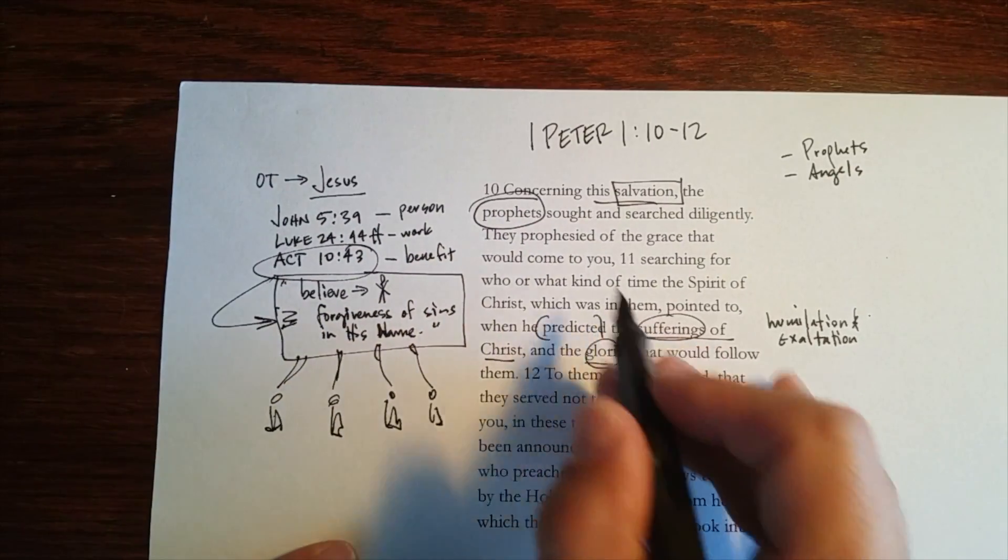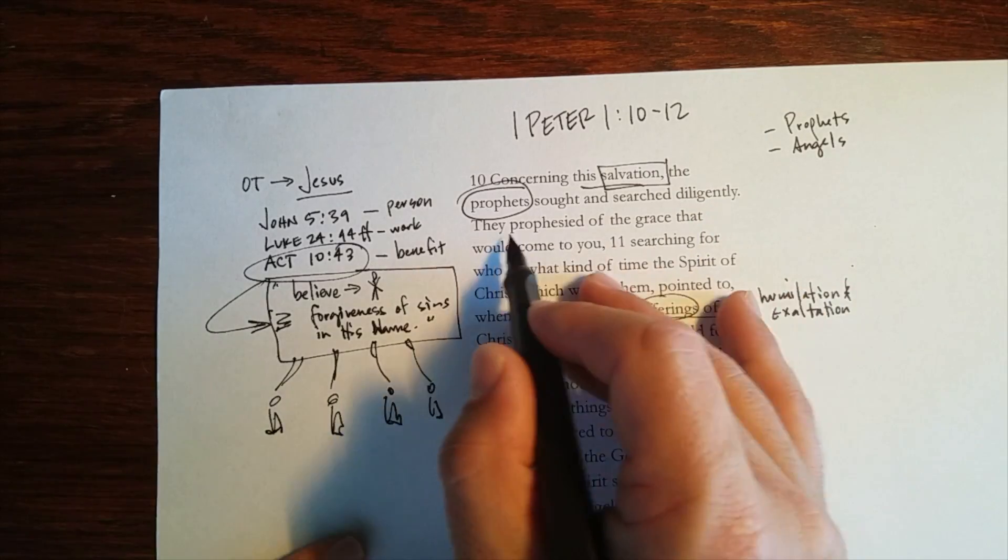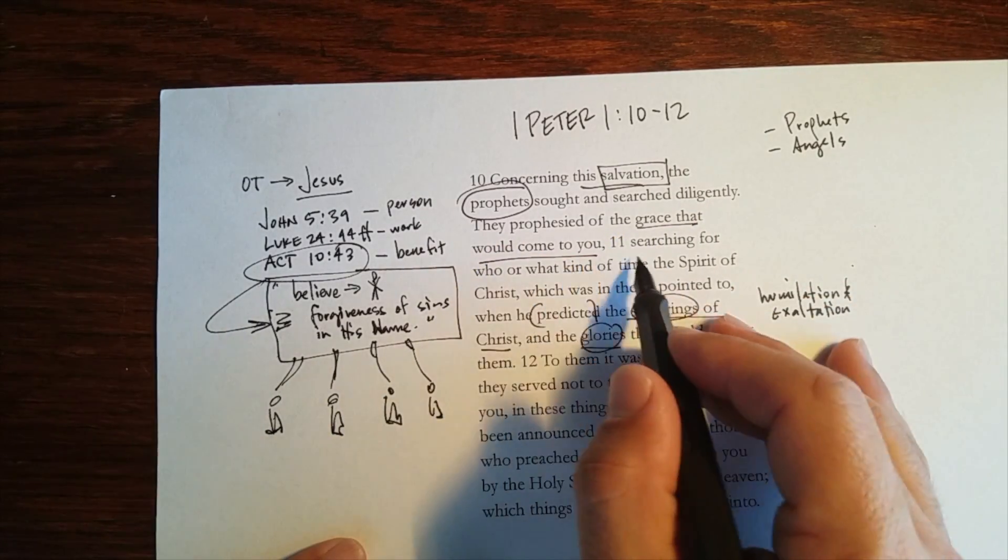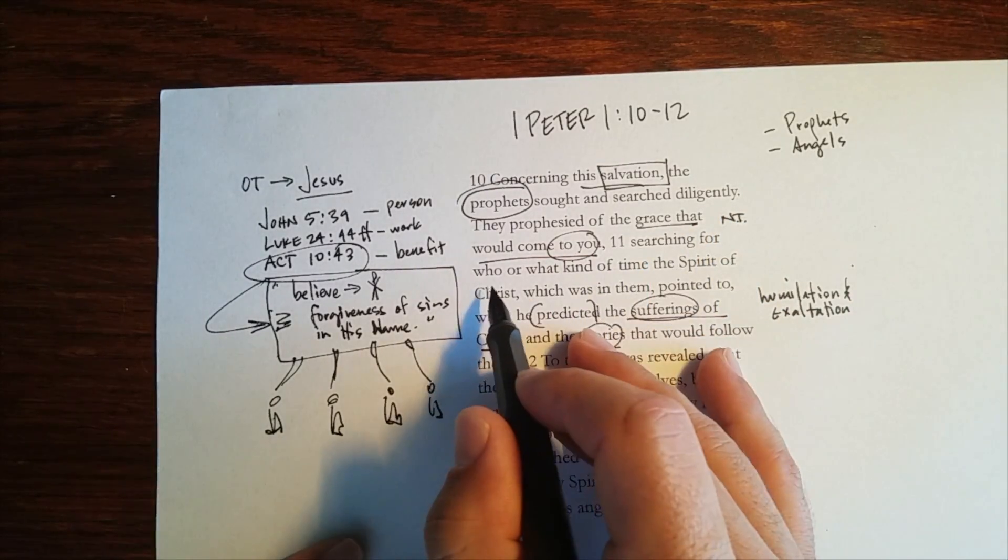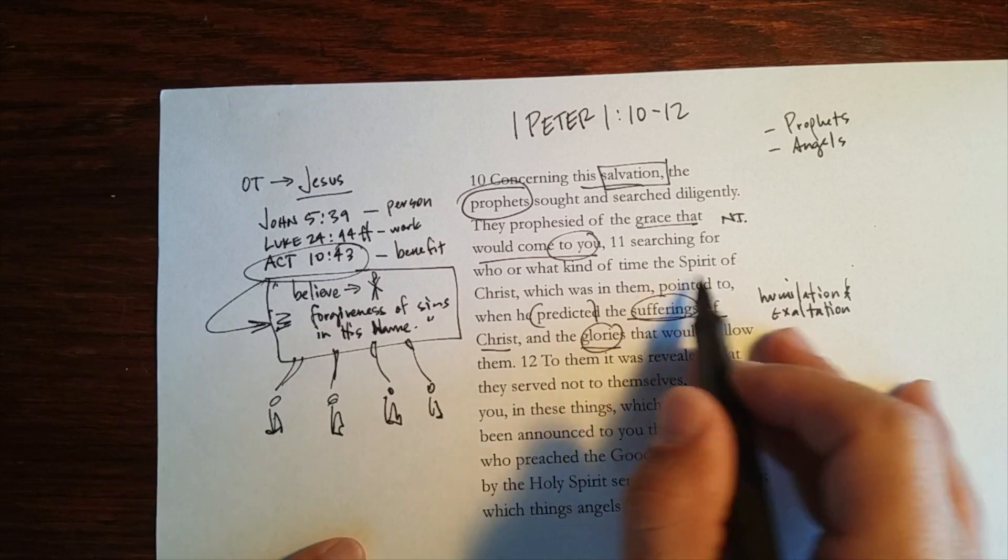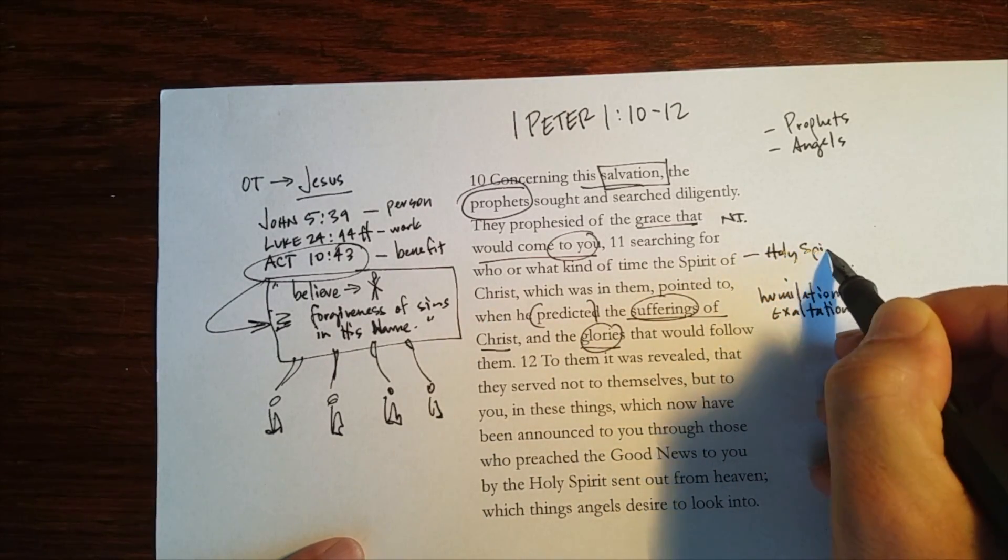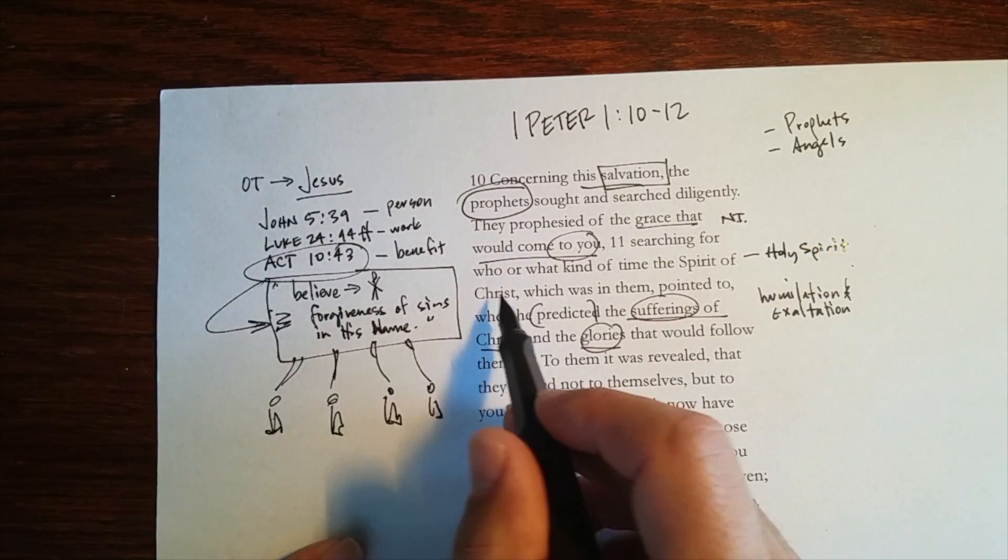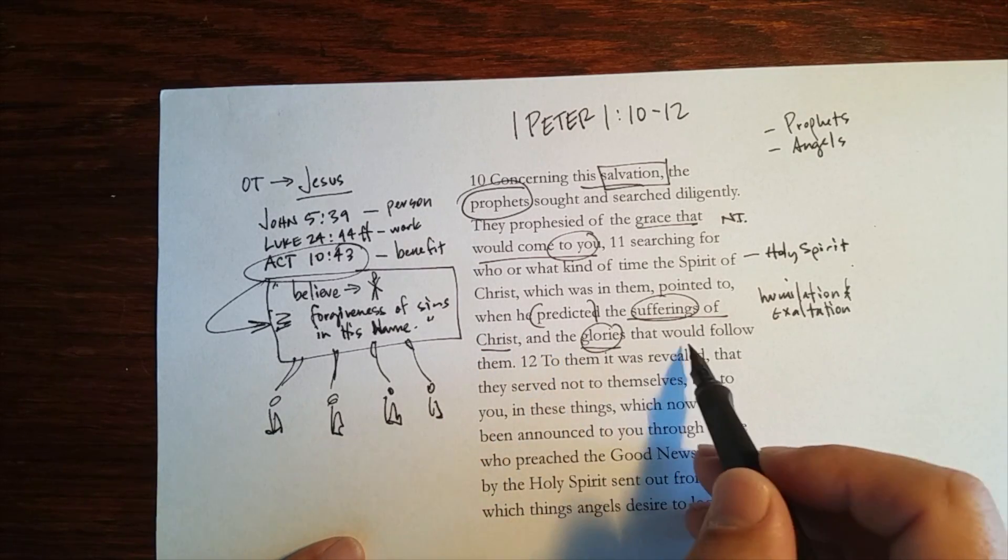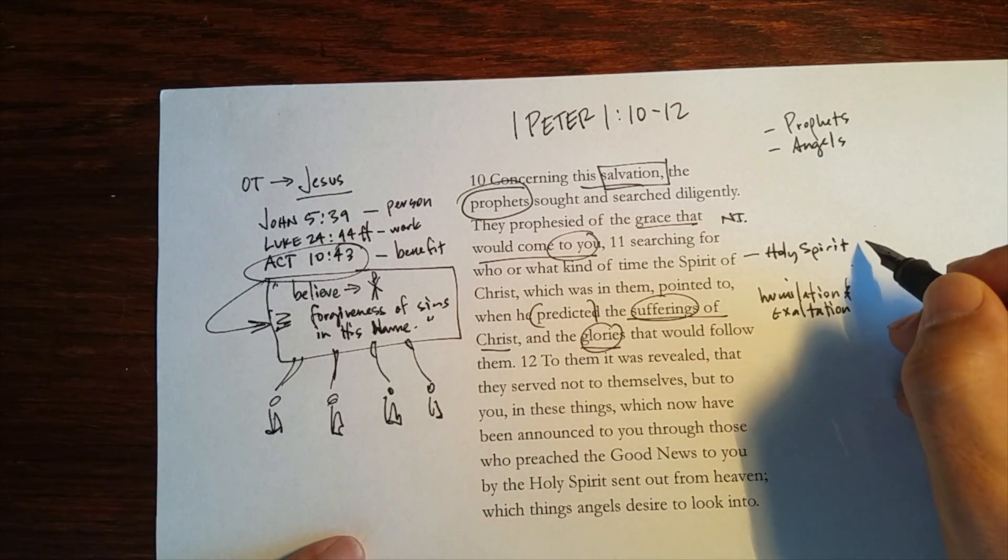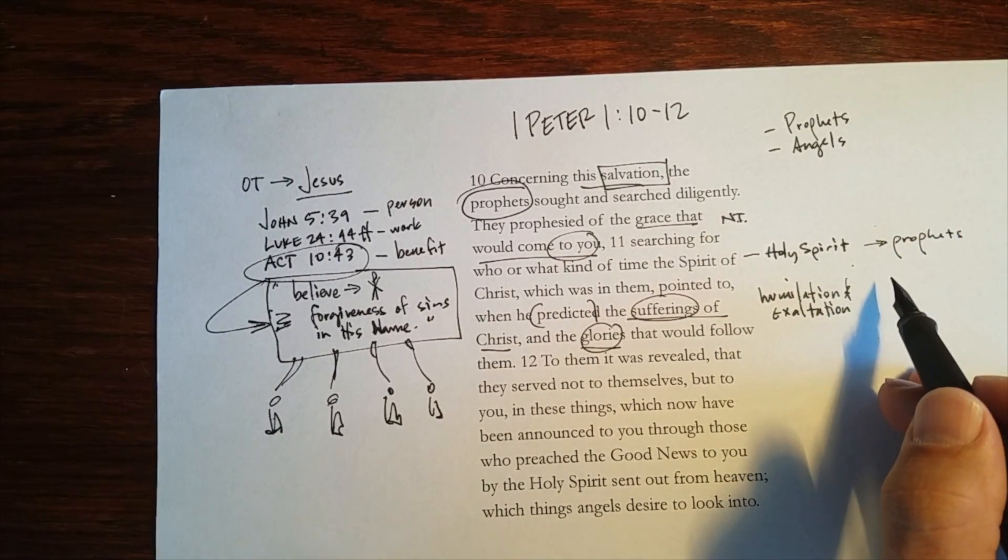This is what the text is saying. Concerning this salvation, the prophets sought and searched diligently. They prophesied the grace that would come to you. That is, they prophesied the New Testament. Searching for who or what kind of time the Spirit of Christ, namely the Holy Spirit, who remember proceeds from the Father and the Son, what kind of time the Spirit of Christ which was in them pointed to when he predicted the suffering of Christ and the glories that would follow. So that the Holy Spirit spoke by the prophets, as we say in the Nicene Creed.